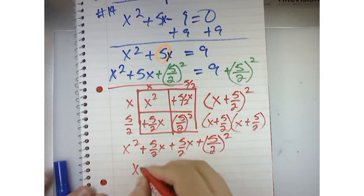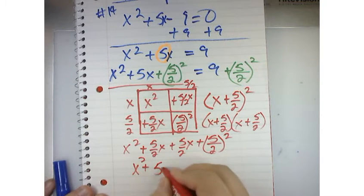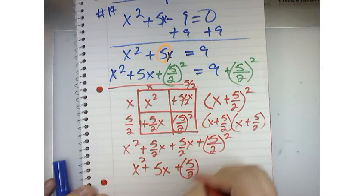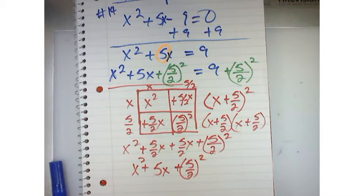So, what I've done is I have created a perfect square. By taking that middle number and dividing it by 2 and then squaring it, I've created a perfect square.